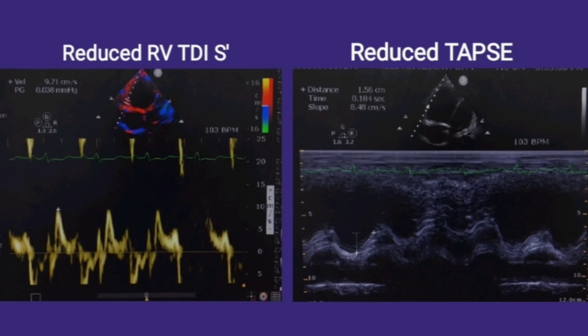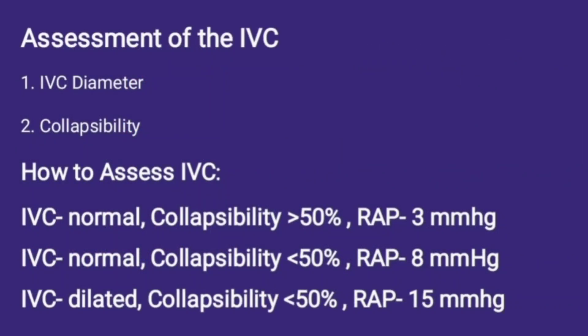The next two parameters help assess right ventricular function. The first image shows the RV TDI S wave, obtained by putting TDI pulse wave Doppler at the lateral tricuspid annulus. An RV TDI S wave of less than 10 cm/s implies reduced RV function. The second image shows TAPSE — tricuspid annular plane systolic excursion — obtained by putting M-mode at the lateral tricuspid annulus. A TAPSE value of less than 17 mm implies reduced RV function.